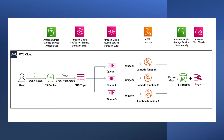Amazon SNS then distributes notifications to three separate SQS queues. The initial design was to run EC2 instances in auto-scaling groups for each resizing operation, but after reviewing the initial design, we recommend replacing the EC2 instances with Lambda functions. The Lambda functions will process the stored images in three formats and store the output in a separate S3 bucket.